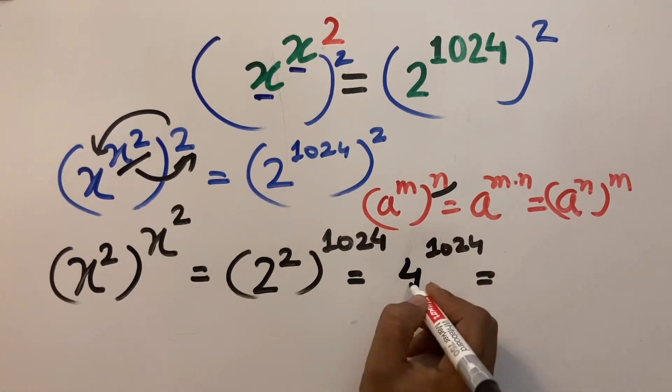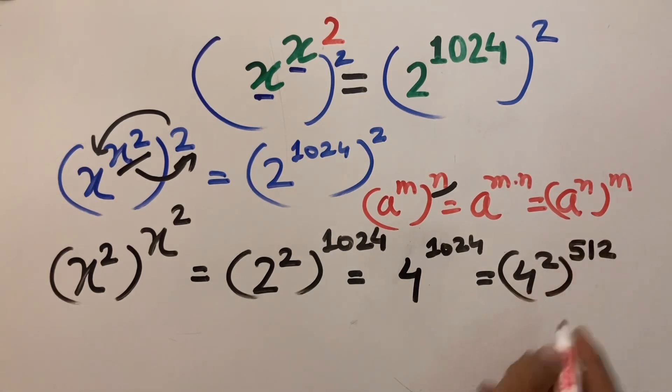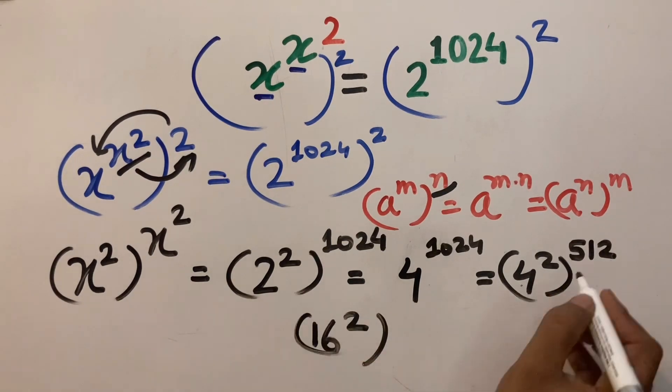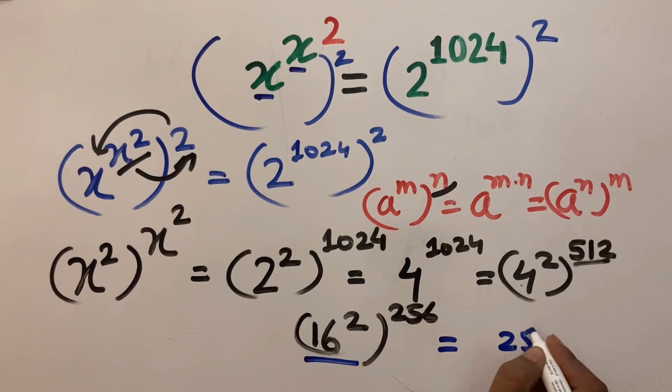Or 4 to the power 2 to the power 512. This is 16 to the power 2, which becomes 256. 16 to the power 2 equals 256 to the power 256.